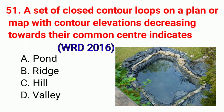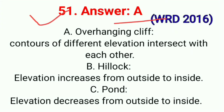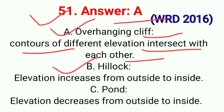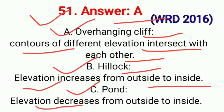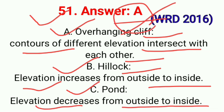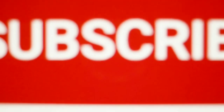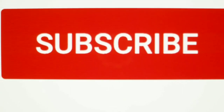In this video, last question — Question No. 51. A set of closed contour loops on a plan or map with contour elevation decreasing towards their common center indicates — correct option A: Pond. Overhanging cliff — contours of different elevations intersect with each other. Hillock — elevation increases from outside to inside. Pond — elevation decreases from outside to inside. Correct option A. This video is finished. I hope this video will be helpful for your exam. For more updates, subscribe to my channel and don't forget to share this video with your friends. Thank you so much.